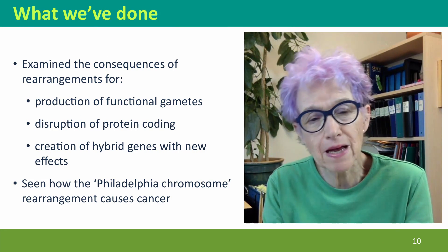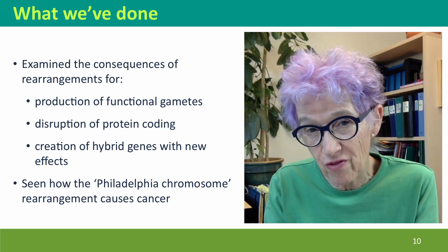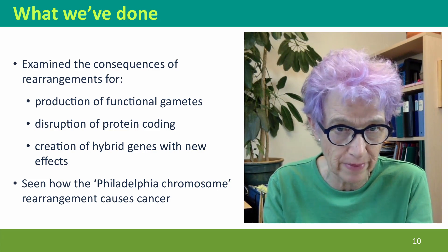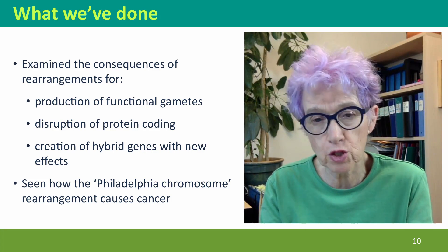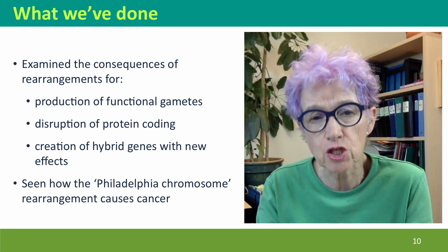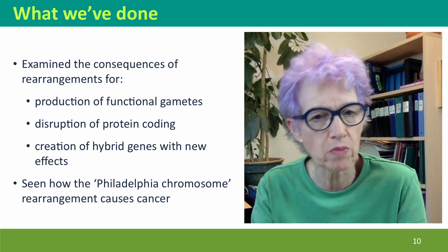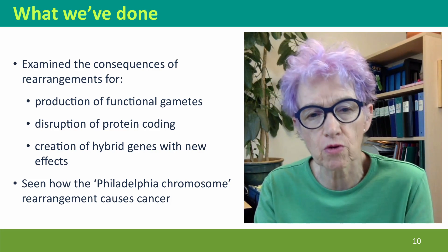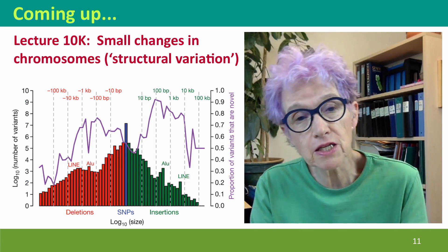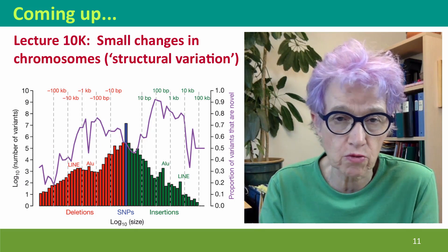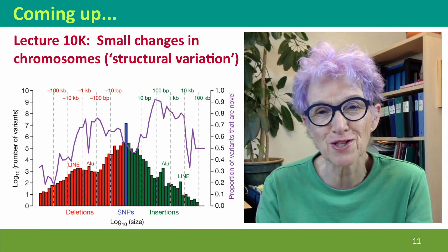So we've examined the consequences of rearrangements for the ability to produce functional gametes — rearrangements very often mean you cannot produce functional gametes. We've considered how the novel joints created where chromosomes break and join to new partners can disrupt protein coding or create hybrid genes with new effects. We've seen one particular example: the Philadelphia chromosome that causes leukemia. Coming up next, we're going to think about smaller changes in chromosomes, the kind sometimes called structural variation by DNA sequencers. I hope to see you there.